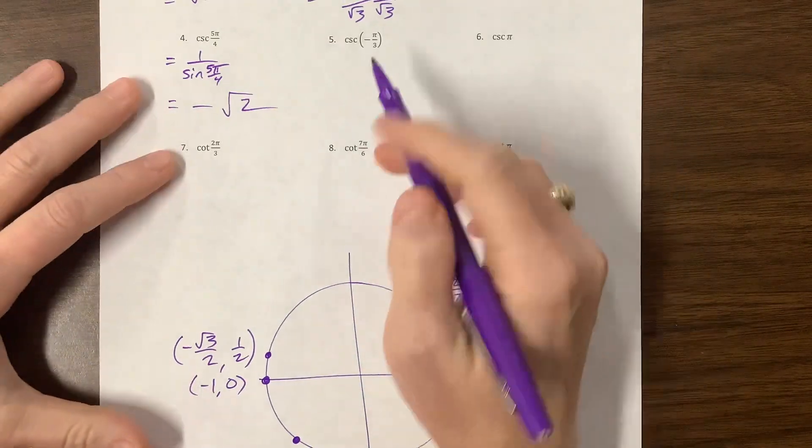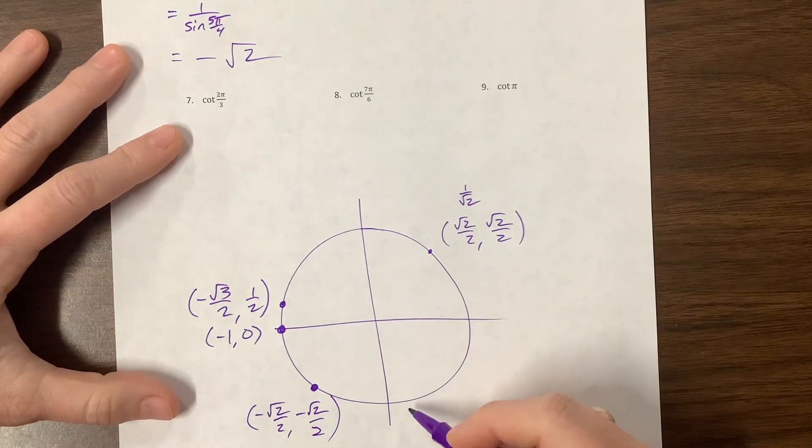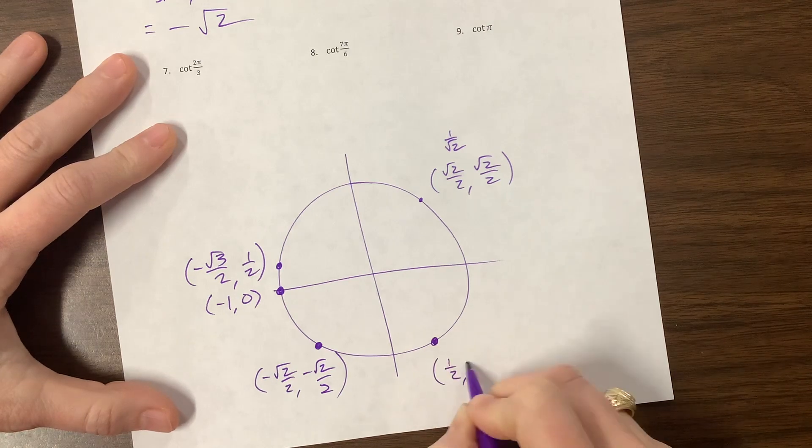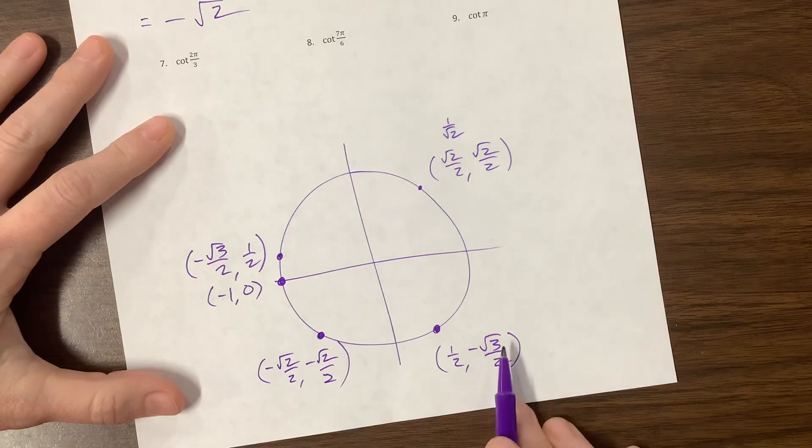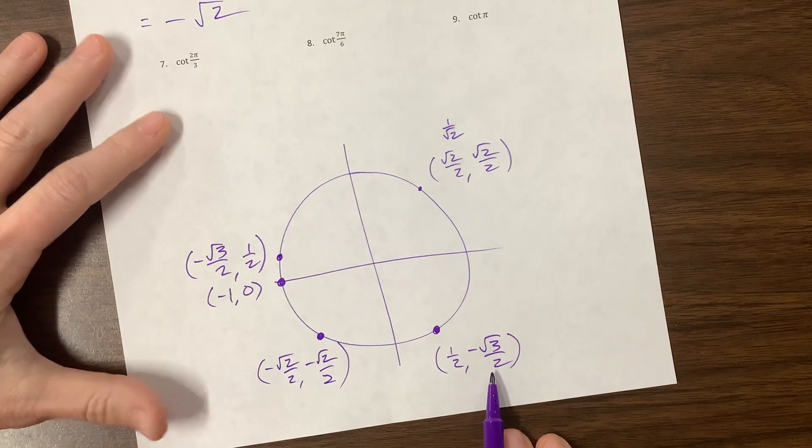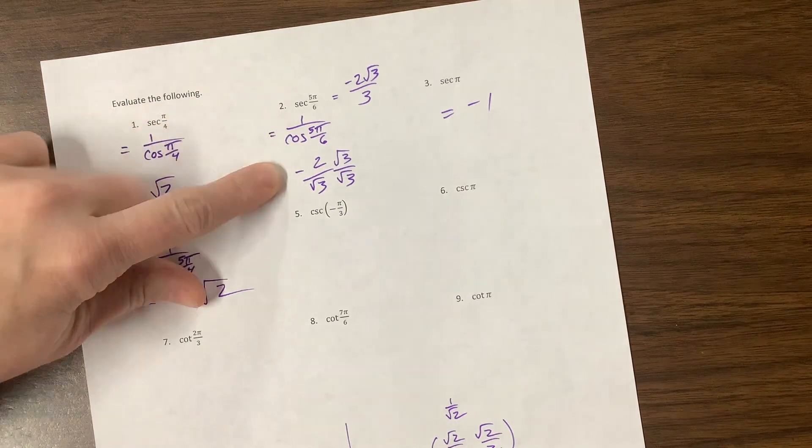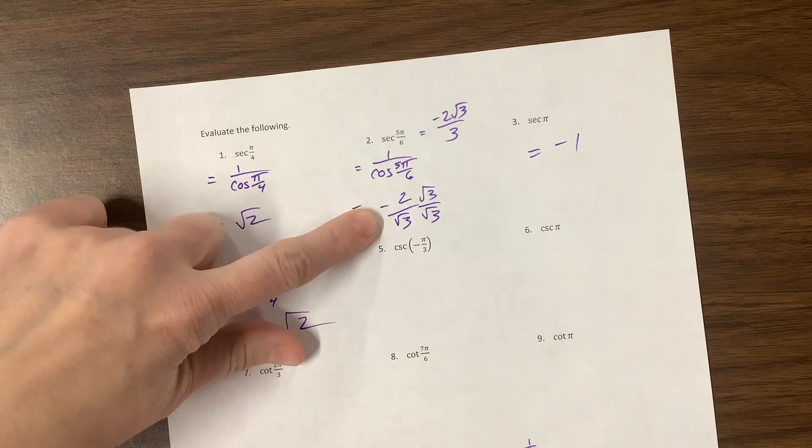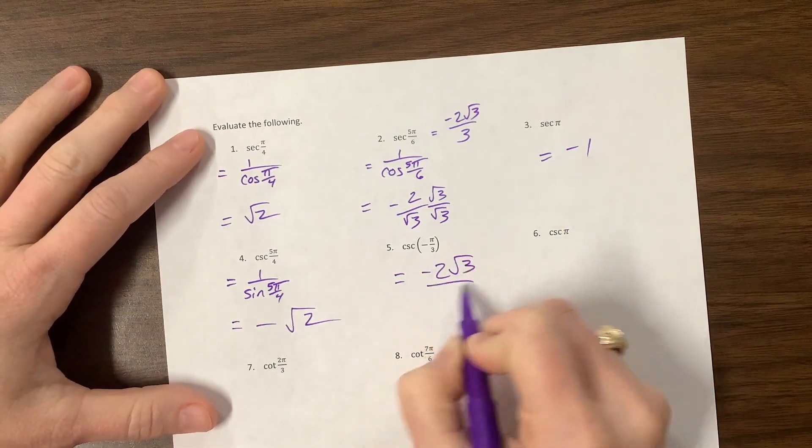Okay, so the next one's cosecant of negative pi over 3. Negative pi over 3 means we go this way, which is also 5 pi over 3. Its coordinates are a positive 1 half and a negative root 3 over 2. The sine value is the y, so we need the reciprocal of this, which actually matches the reciprocal of that. So it's the reciprocal of root 3 over 2 is 2 over root 3, which we saw a second ago. We already rationalized the denominator. It's the exact same answer. Negative 2 root 3 over 3.